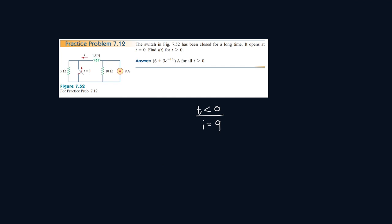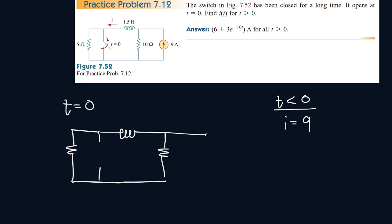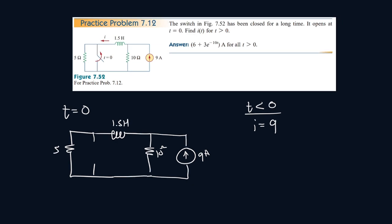Now when t is equal to 0, we open this switch. What does this mean for the current passing through this inductor? Well, when t was less than 0 it was 9 amps, and when t is equal to 0, the current at t=0 will also be 9 amps, because the current passing through an inductor cannot change instantaneously.